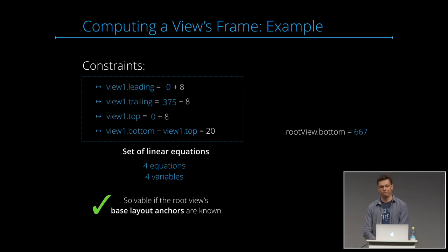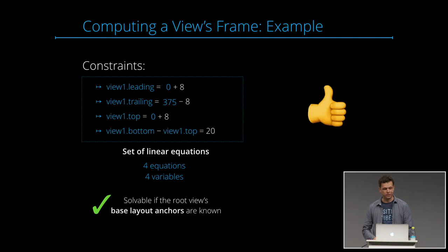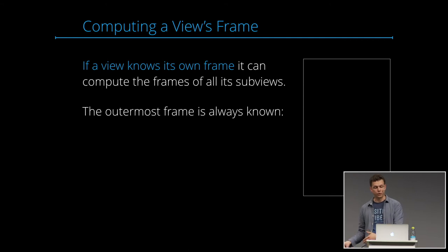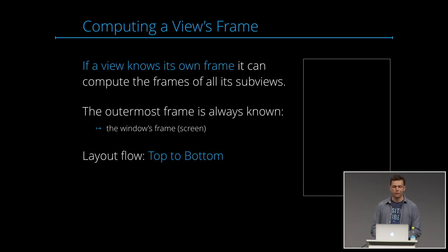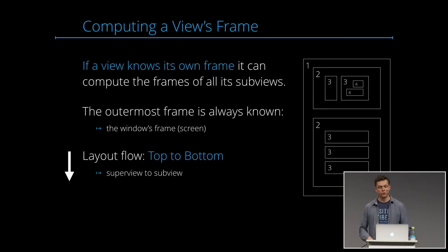That's only possible because we already knew the superview's base layout anchor values. This is a general rule: if a view knows its own frame, it can always compute the frames of all its subviews. The outermost frame is always known — it's the window's frame, the screen. For that reason, the layout flow is always from top to bottom: we start with the outermost view, then it computes the frames of its subviews, and those subviews compute the frames of their subviews, and so on — always from superview to subview.